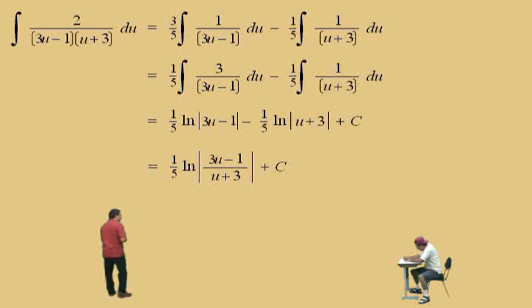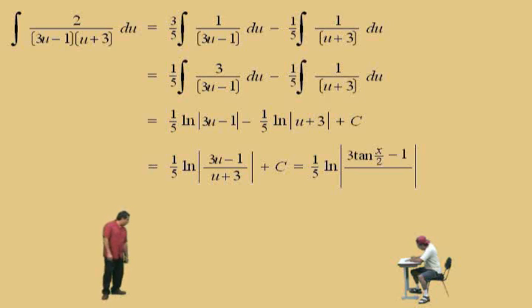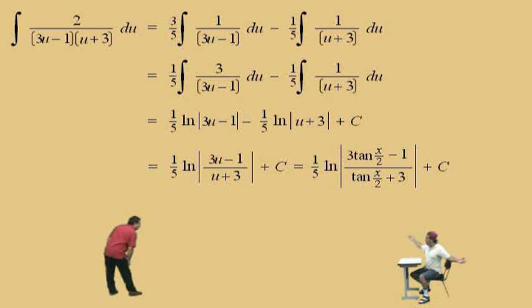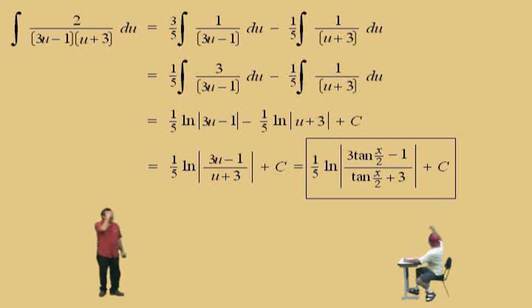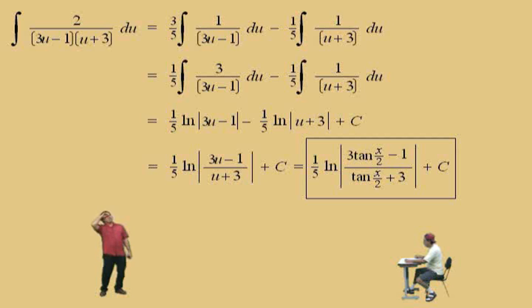Now we can finally replace u with tangent of x over 2. So we get one-fifth natural log of |3 tan(x/2) minus 1| over |tan(x/2) plus 3|, plus C. And we're still not done — there's one more thing to do. Circle your answer! Now, that was a good warm-up problem. We're going to come back later and do some more problems. We'll see you all again soon.